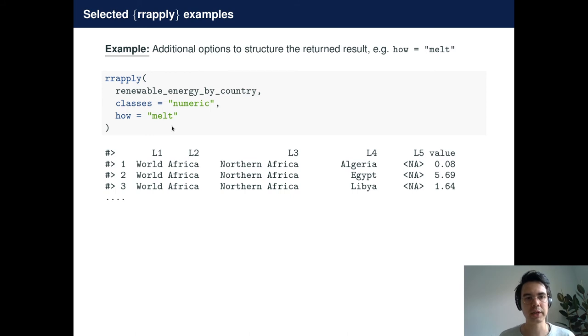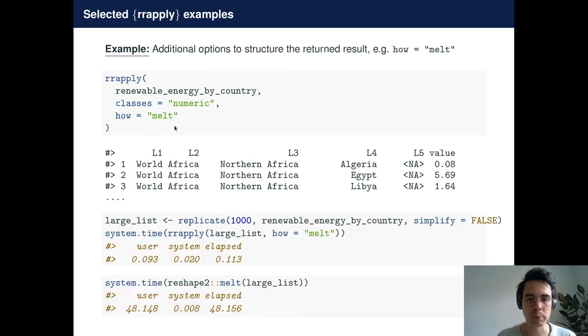And this is essentially the same as what can also be done with the melt function that is available through the reshape2 package. So if we compare the computation times of both functions applied to a large list object, then we can see that with the new RRApply function, we can actually achieve significant speed-ups with respect to the existing melt function that is available in the reshape2 package.